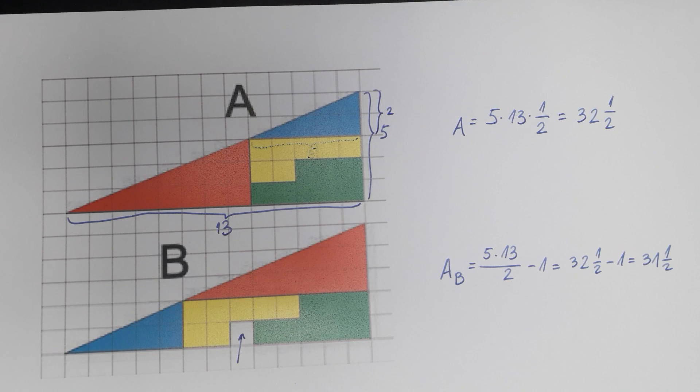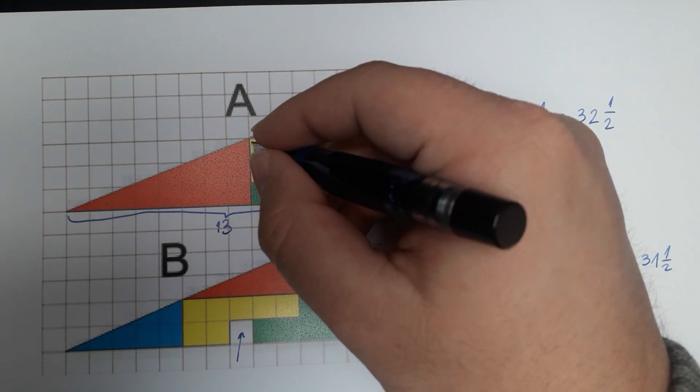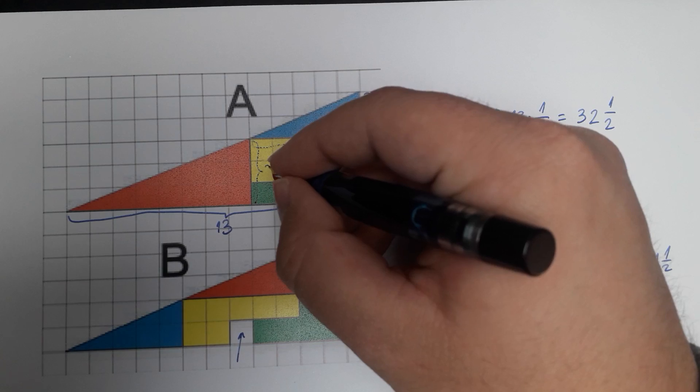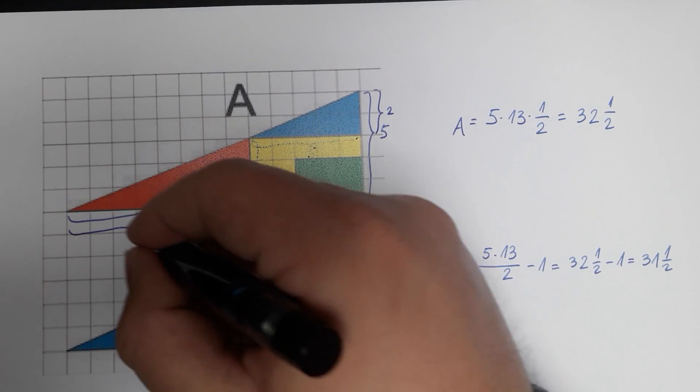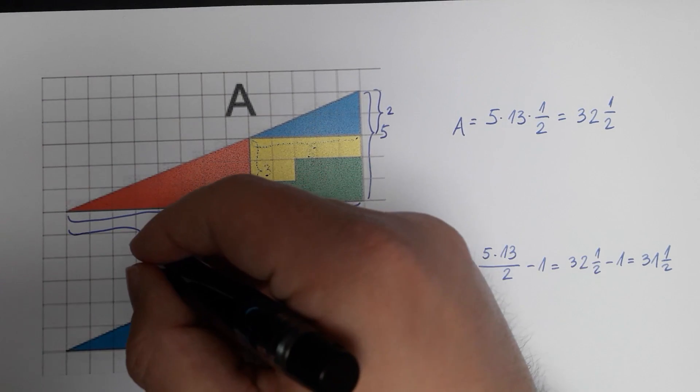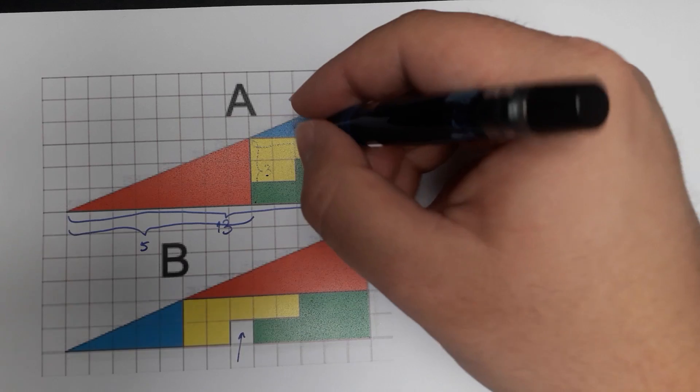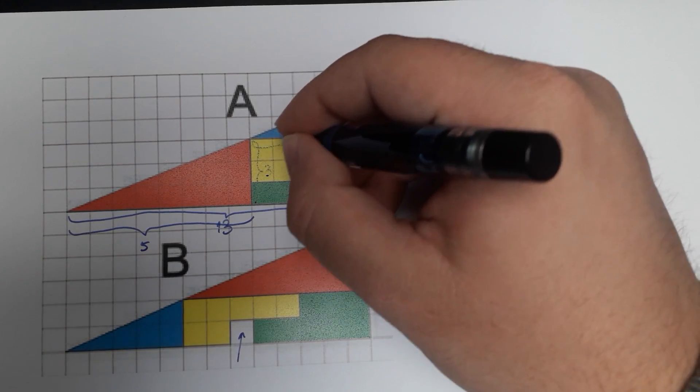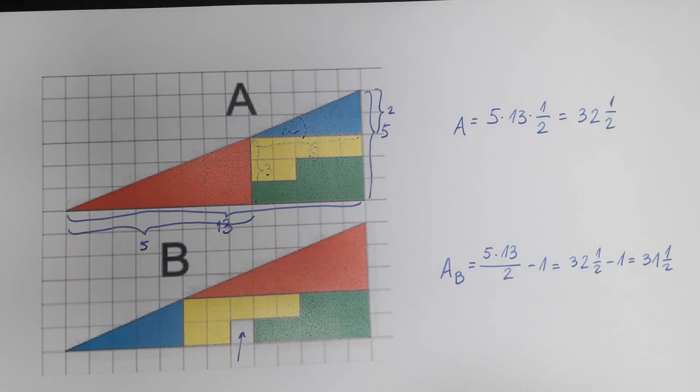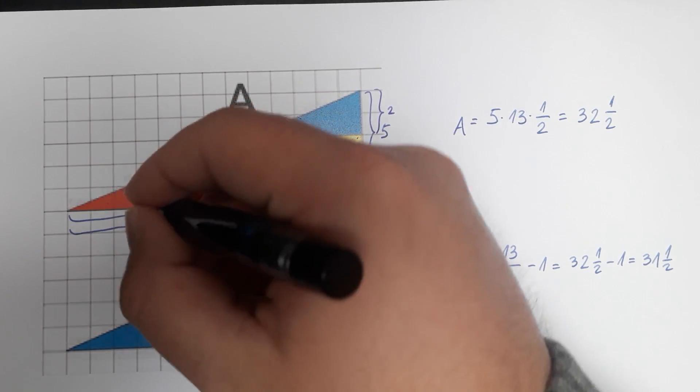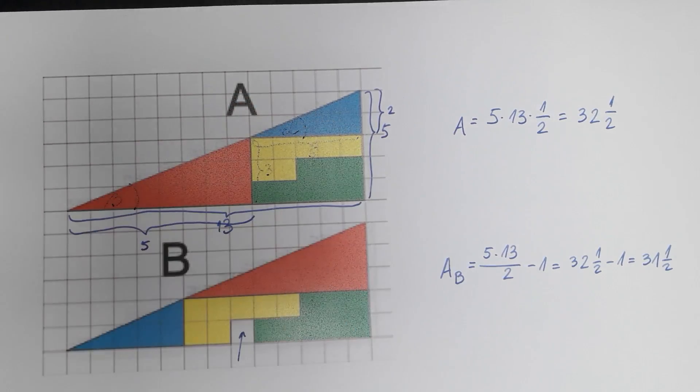If you have a look now at the red triangle, its dimensions are 3 by 8. The height of the red triangle is 3 and the width of the red triangle is equal to 8. Now we can name this angle of the blue triangle to be alpha, this angle right here. We can also name this angle of the red triangle to be beta.